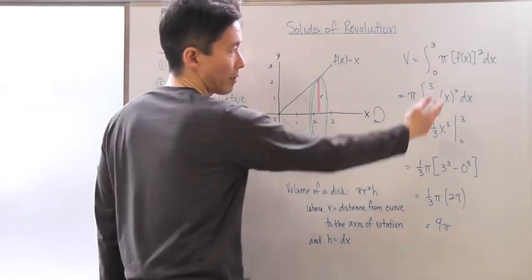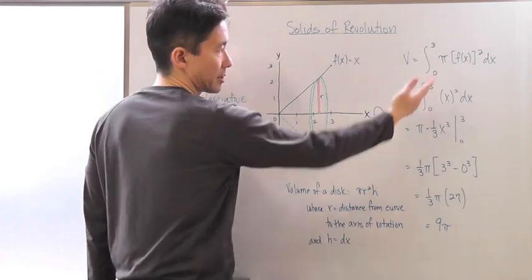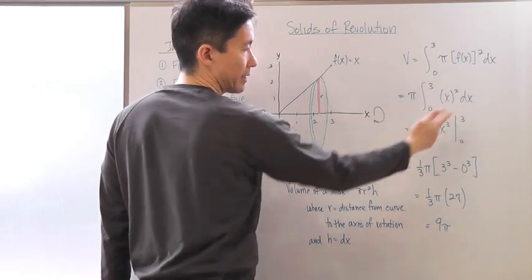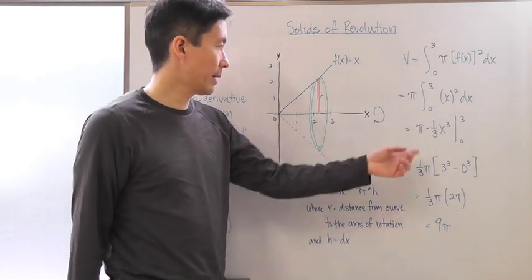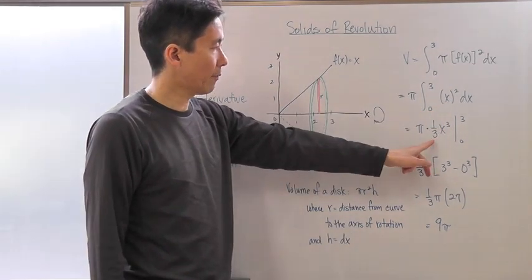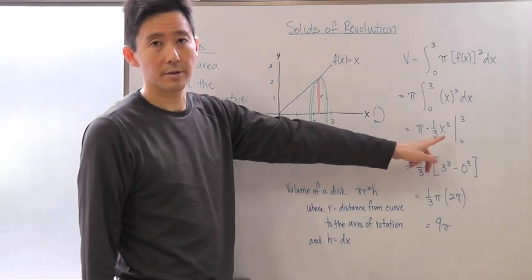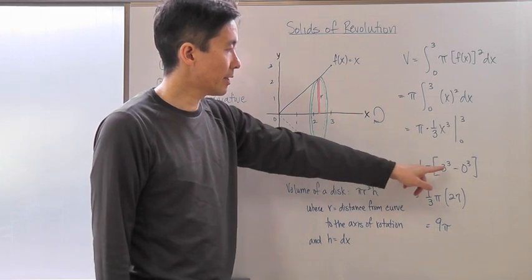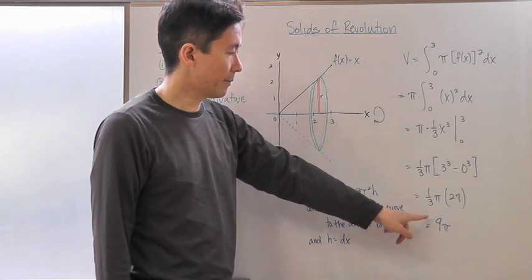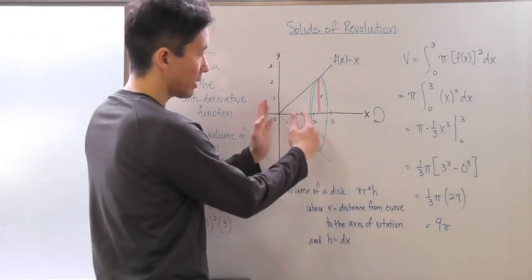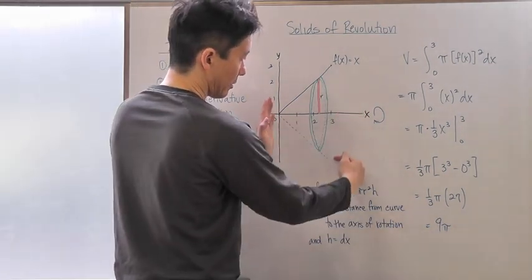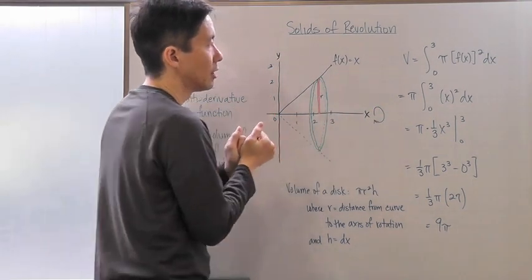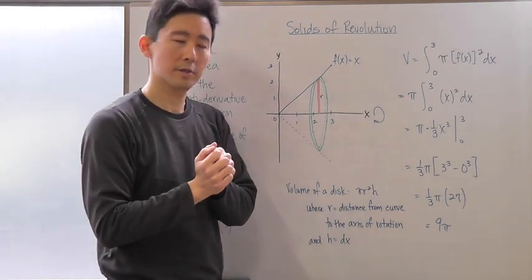Substituting f(x) = x, the volume becomes pi times the integral from 0 to 3 of x squared dx. Pulling pi out as a scalar, integrating gives one-third x cubed. Applying the fundamental theorem of calculus: one-third pi times (3 cubed minus 0 cubed) = 9pi. That's the volume of this cone-shaped solid of revolution.